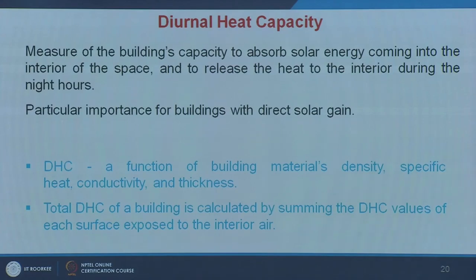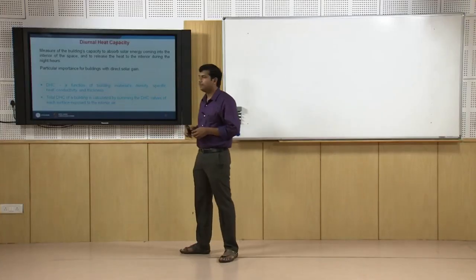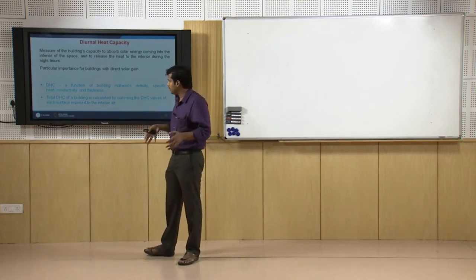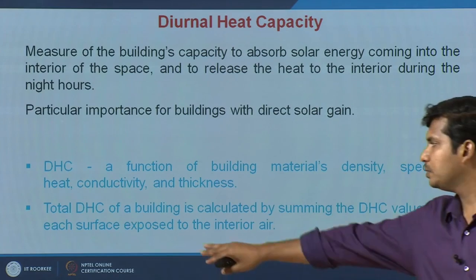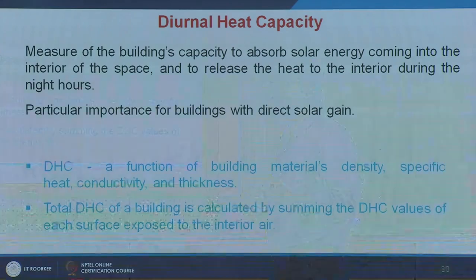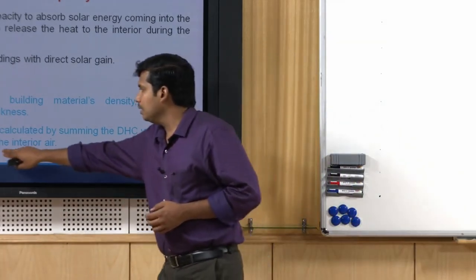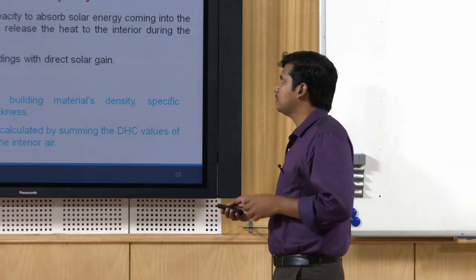Another commonly used term is Diurnal Heat Capacity (DHC), an indicator of capacitive insulation. It is a function of building material density, specific heat, conductivity, and thickness. To calculate the DHC of a particular built form or space, you sum up the DHC values of each surface exposed to the interior air — representing how much thermal mass is available for heat storage and heat exchange with indoor air.